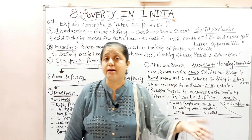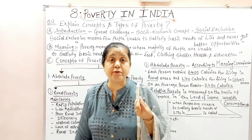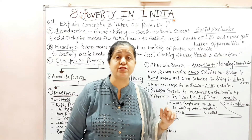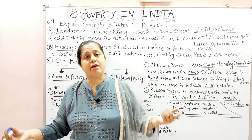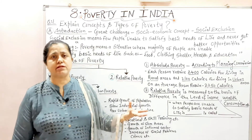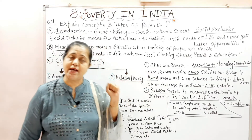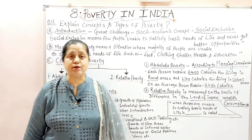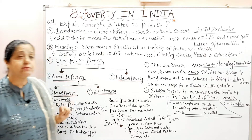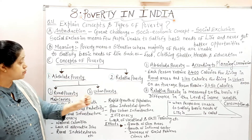Our government tries through various reforms to gradually eradicate and reduce the poverty problem in our Indian economy. So that is absolute poverty — divided into two types: one is rural poverty and the other is urban poverty.